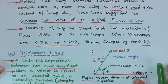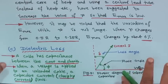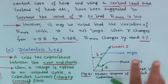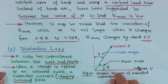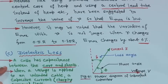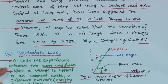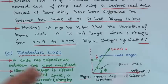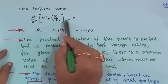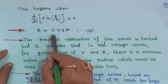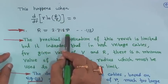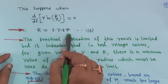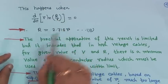This derivative should be done as an exercise: find that R = 2.718 × r (i.e., R/r = e).